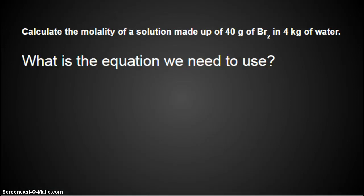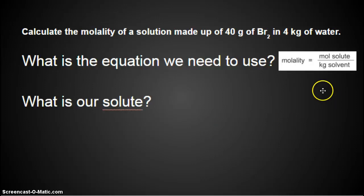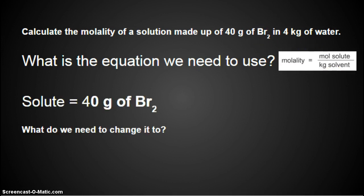Calculate the molality of a solution made up of 40 grams of dibromide in 4 kilograms of water. So what's the equation we need to use? Look on your cheat sheet. That's why you have it. What equation are we going to use? Molality is moles solute, divided by kilograms of solvent. And which one is our solute? Our solute is 40 grams of Br2, because our solvent is the water. And also the solute is dissolved in the water. So that 'in' is your context clue to tell you that the water is the solvent.